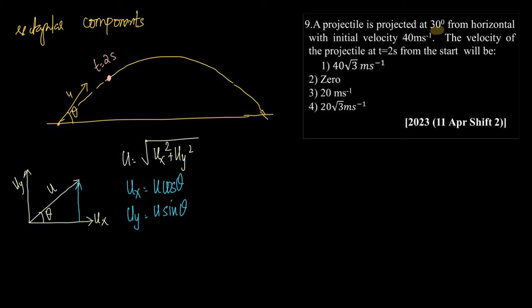Now, if ux is equal to u cos theta and uy is u sin theta, what is the given value of u here? Given value of u is 40 meters per second and the given value of theta is 30 degrees. So what is ux? ux here will be equal to 40 into cos 30 which is equal to 40 into root 3 by 2 or 20 root 3.